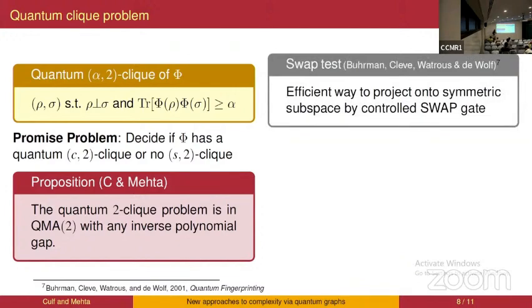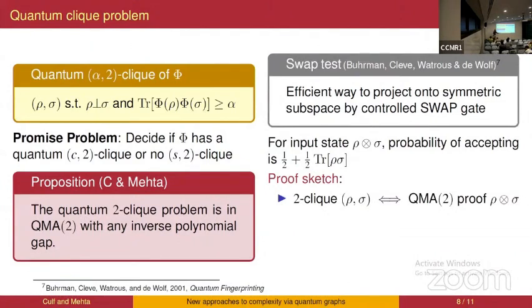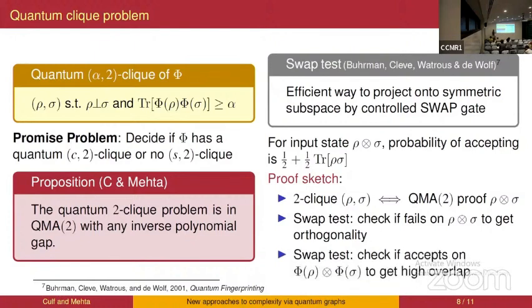The QMA2 membership proof uses the swap test. The QMA2 proof is just the tensor product of the two states forming the clique. Verification works as follows: with some probability, the verifier does the swap test on the two input states to check that they're orthogonal; the rest of the time, the verifier applies the channel to both states and does swap tests again to check that they have high overlap.